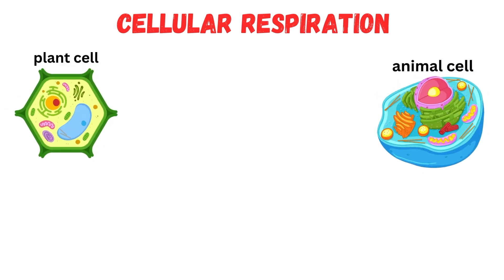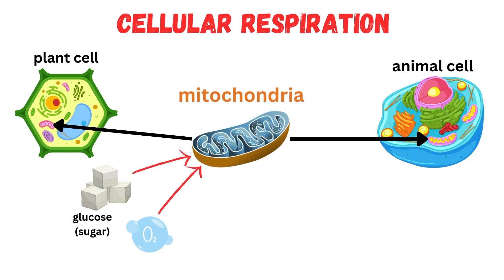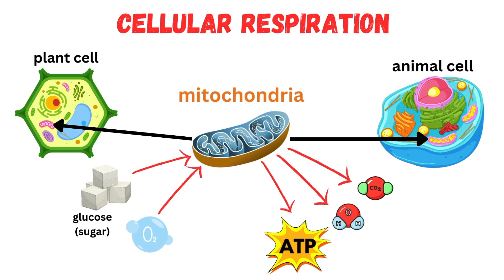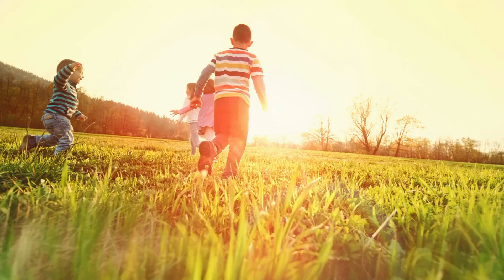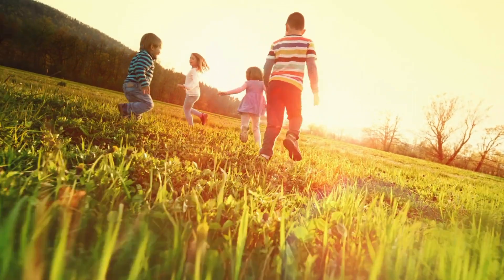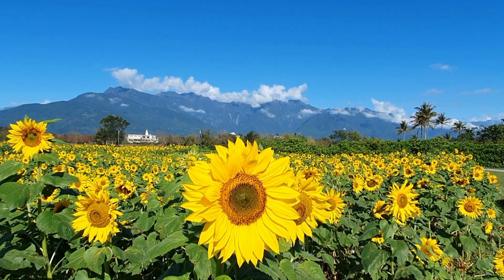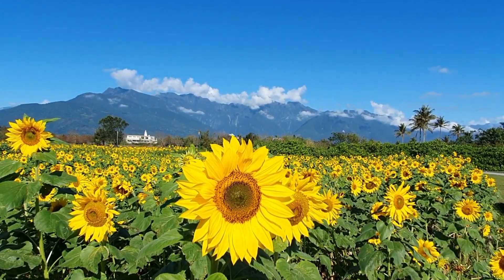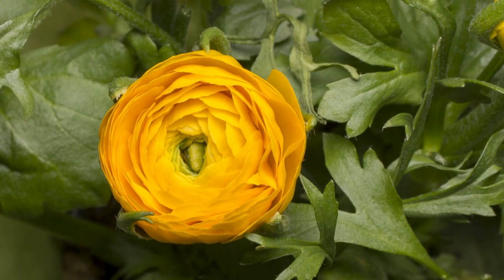Cellular respiration happens in both plants and animals. Mitochondria break down glucose using oxygen to make carbon dioxide, water, and ATP — the energy our cells need to do everything. It's the reason why we can run, grow, and even breathe. Even though plants make their own food through photosynthesis, they still need to perform cellular respiration to turn that food into energy.